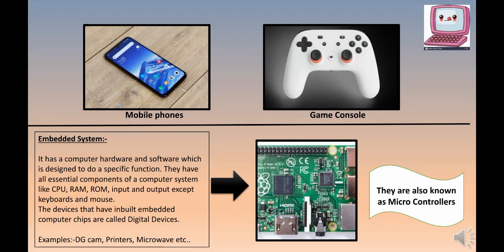Here are the last two types: mobile phones and game consoles. Every student now uses their phone to study various subjects, so no explanation is needed for mobile phones. The last is the game console — this is very familiar to children. When we used to play games like Mario, we would connect this remote to our televisions and control all the moves with it. This is known as a game console.